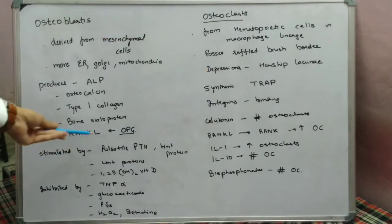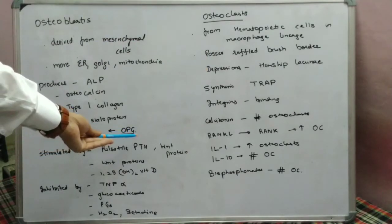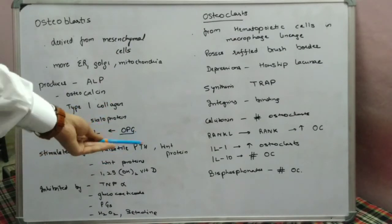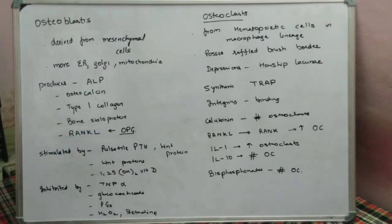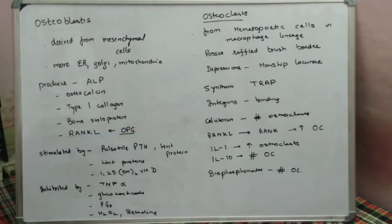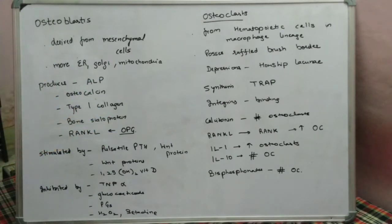At the same time, osteoblasts produce osteoprotegerin (OPG), which is the inhibitor of RANK ligand. So osteoblasts produce both RANK ligand and OPG. Factors that stimulate the osteoblast include pulsatile PTH, which is teriparatide used in osteoporosis patients — pulsatile PTH leads to stimulation of osteoblasts and more bone production.